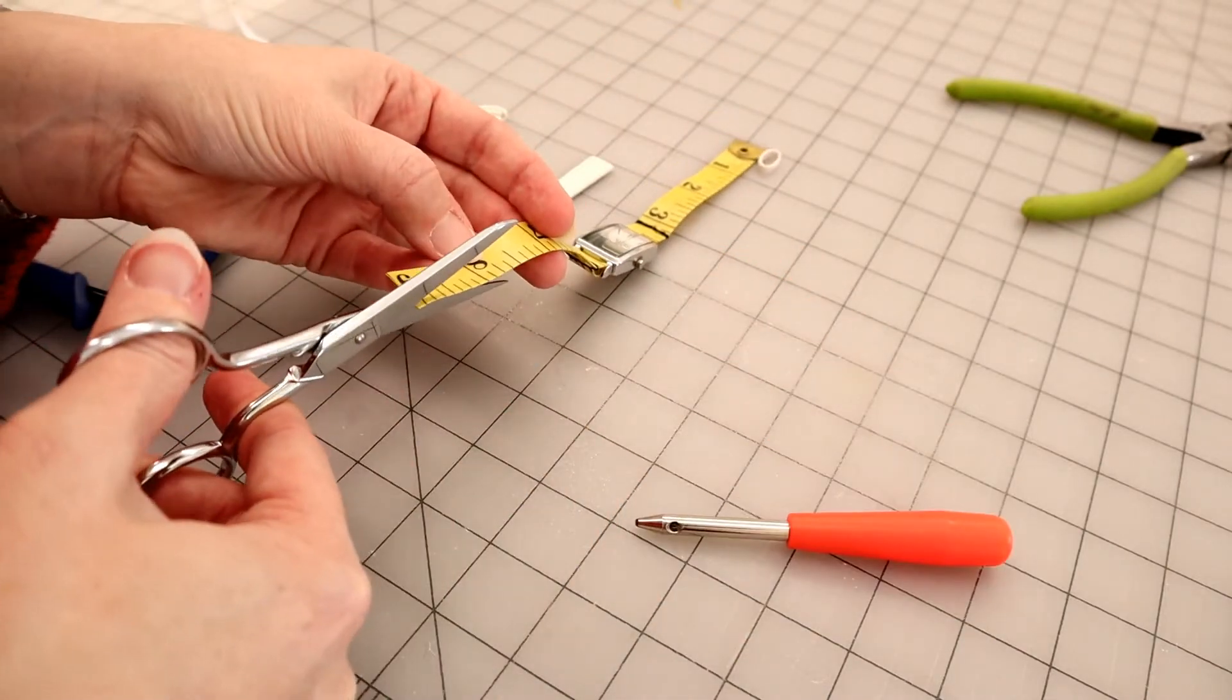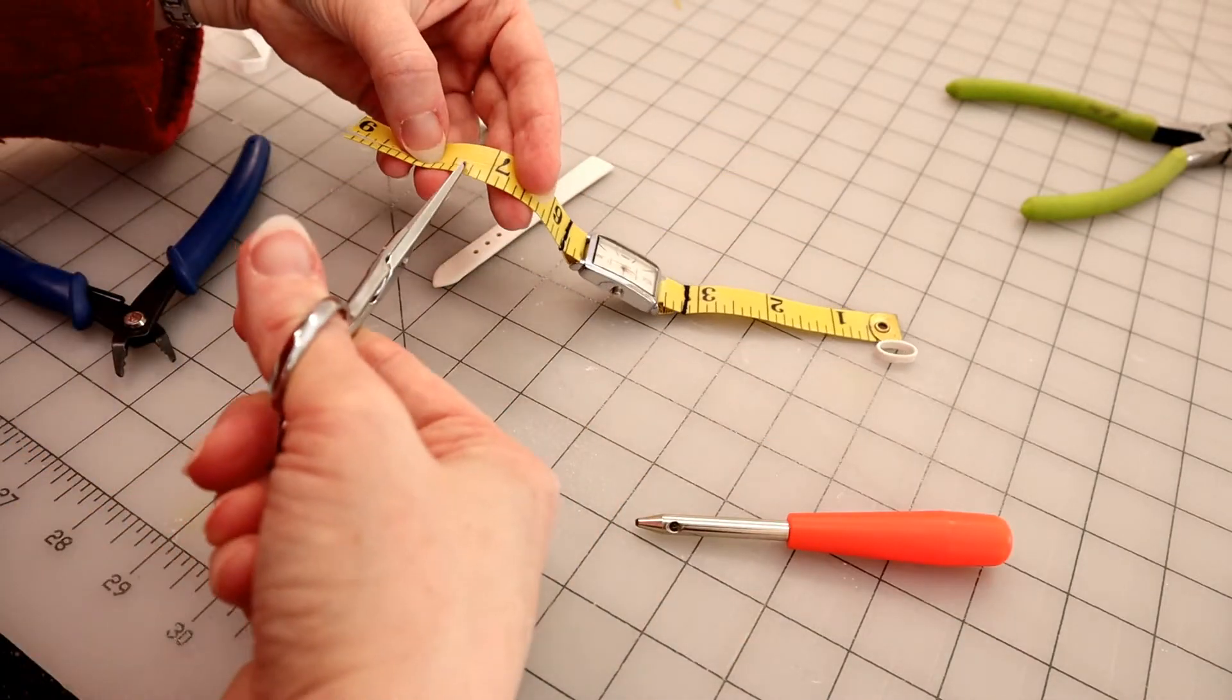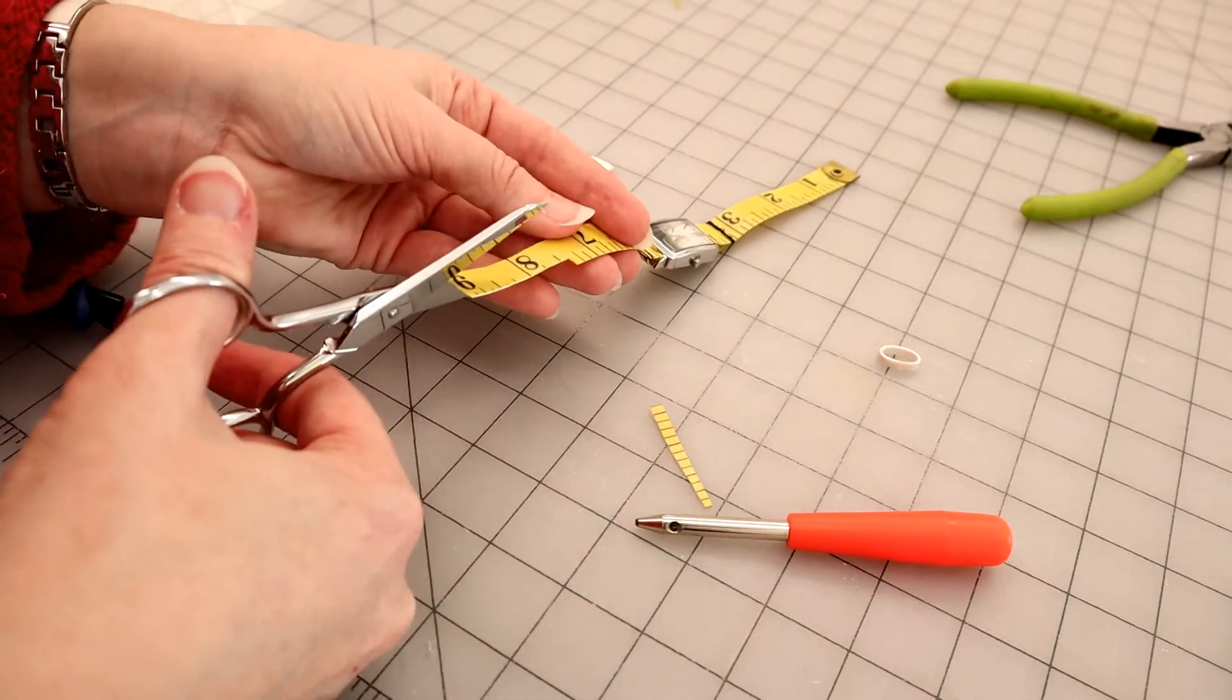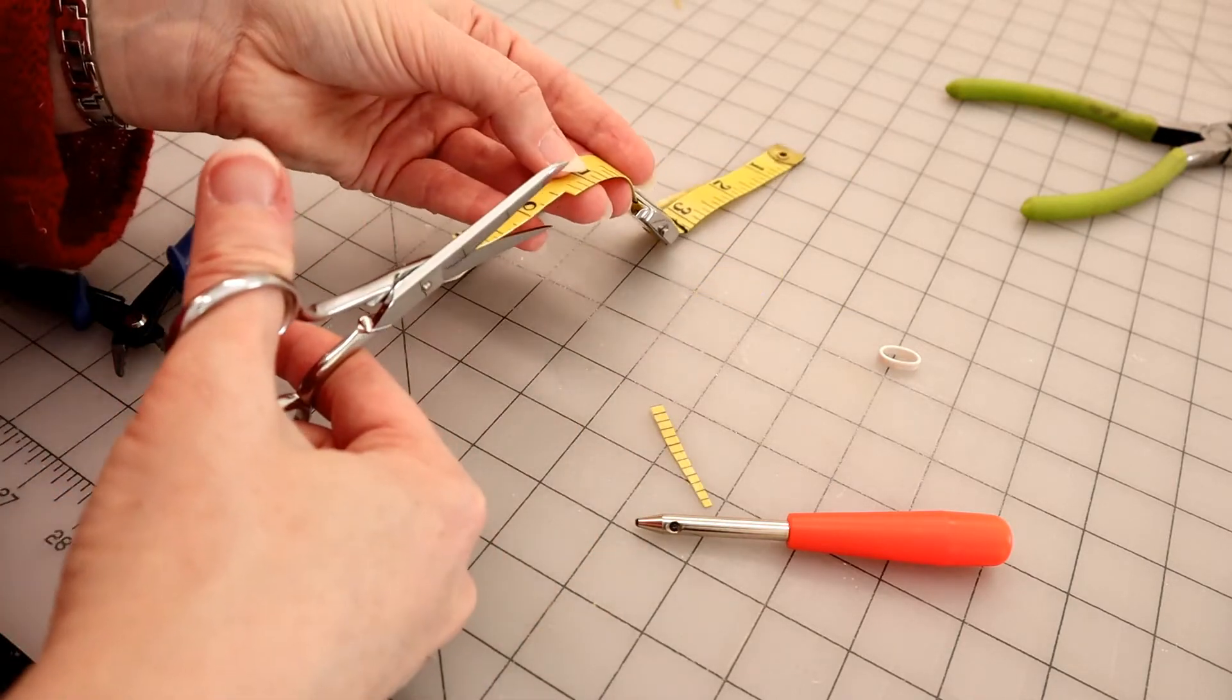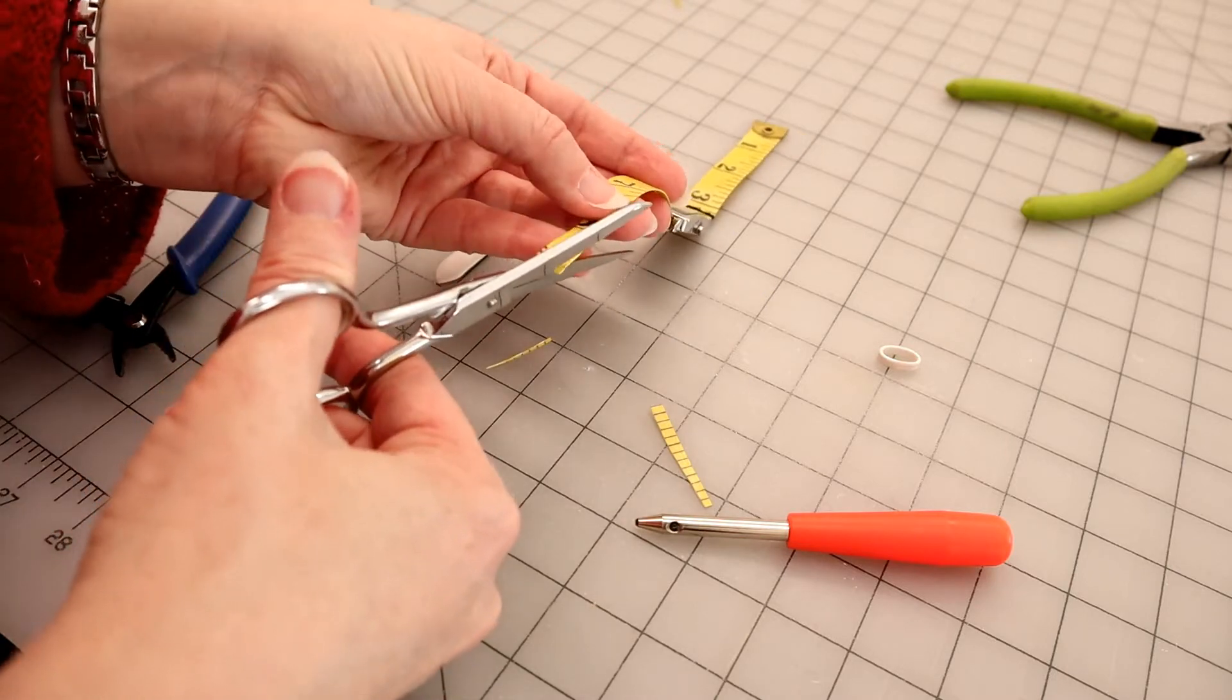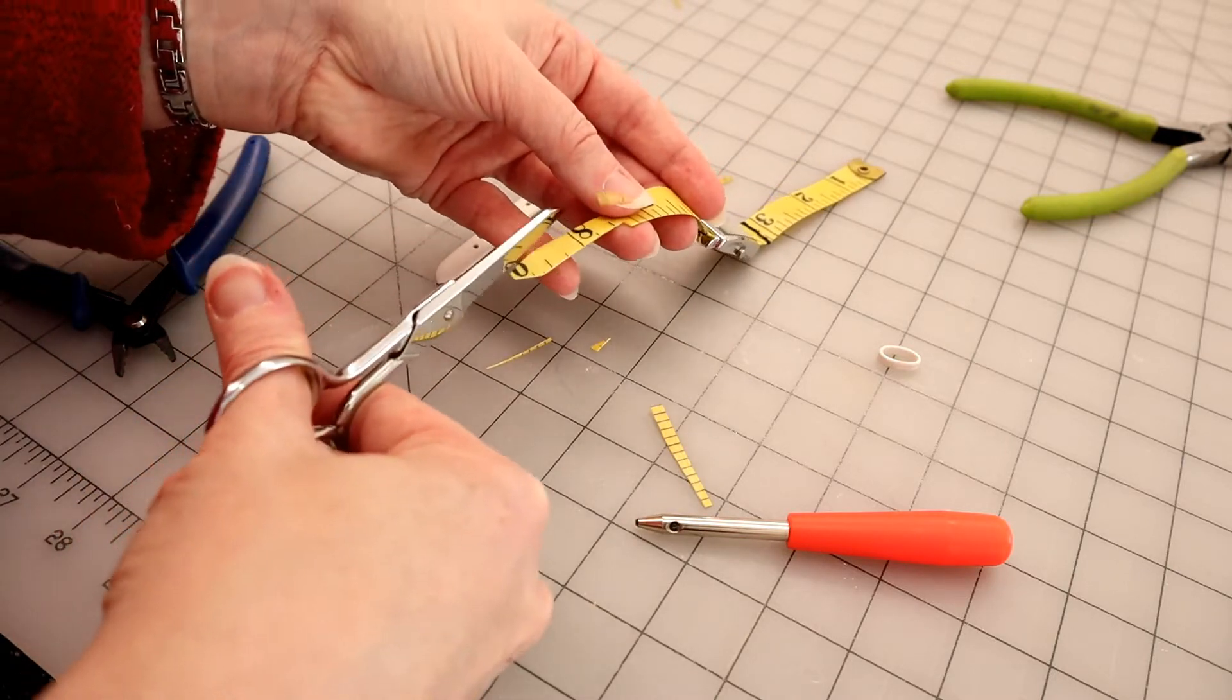So right now what I'm going to do is I am tapering the measuring tape part of the band to be similar in width to the original band. The reason why I have to do it is because this has to slip through the latchy part that came with it.